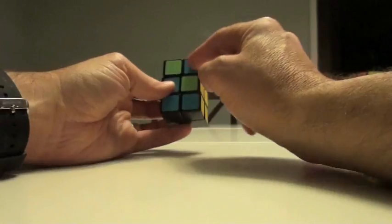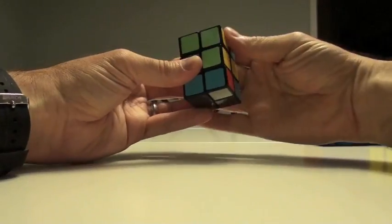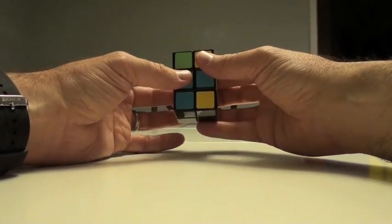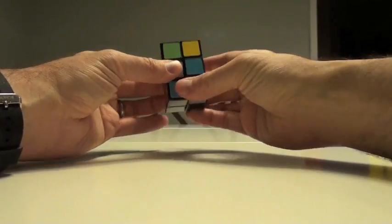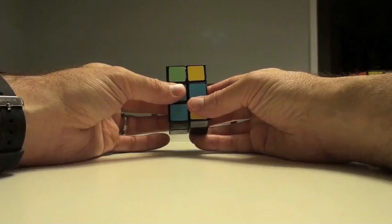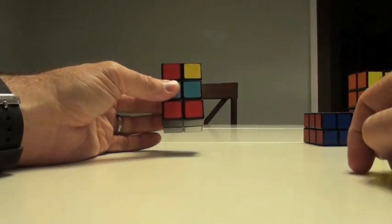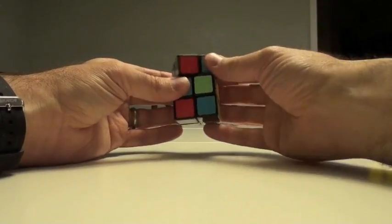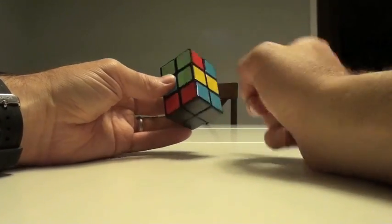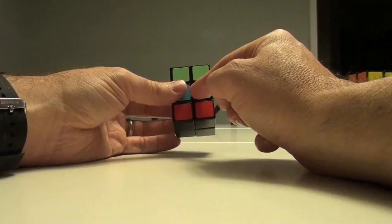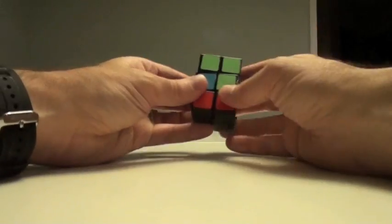So to move this to here, the algorithm is again simply 2R U 2R UI 2R, and then keeping this stationary, the top and the bottom here all have to move in this direction in this counterclockwise direction. So we're going to do a UI and then we're going to do a D, then we're just going to do the inverse of what we just did: 2R UI 2R U 2R. It didn't change this, we still have parity over here, but it did move that, it did do that switch.